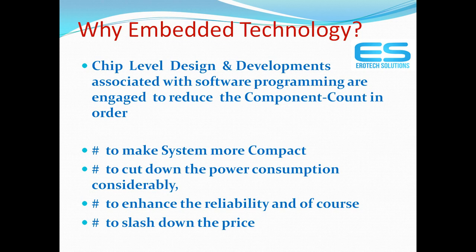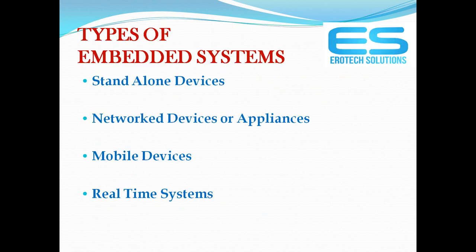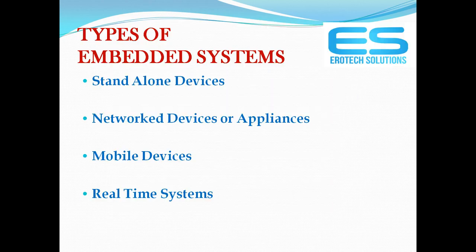You need to choose embedded technology because many companies are engaged with it, and you need to make systems very compact in size. The three major parameters to concentrate on are size, power consumption, and cost. Types of embedded systems include standalone, network, mobile, and real-time. We are located in Hyderabad near JNTU KPHB Metro Station — around 200 to 300 meters walkable distance from KPHB Metro Station to our office.